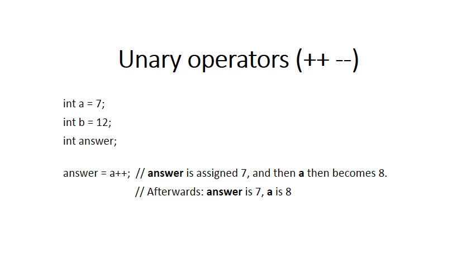Now, the way C-sharp does this is as follows. Because the plus-plus is after the variable a, it first assigns the 7, the current value of a, to answer. So after this expression, answer will have the value 7. After doing the assignment statement, it increases a to 8. So after this statement, answer will have the value 7, and a will have the value 8.